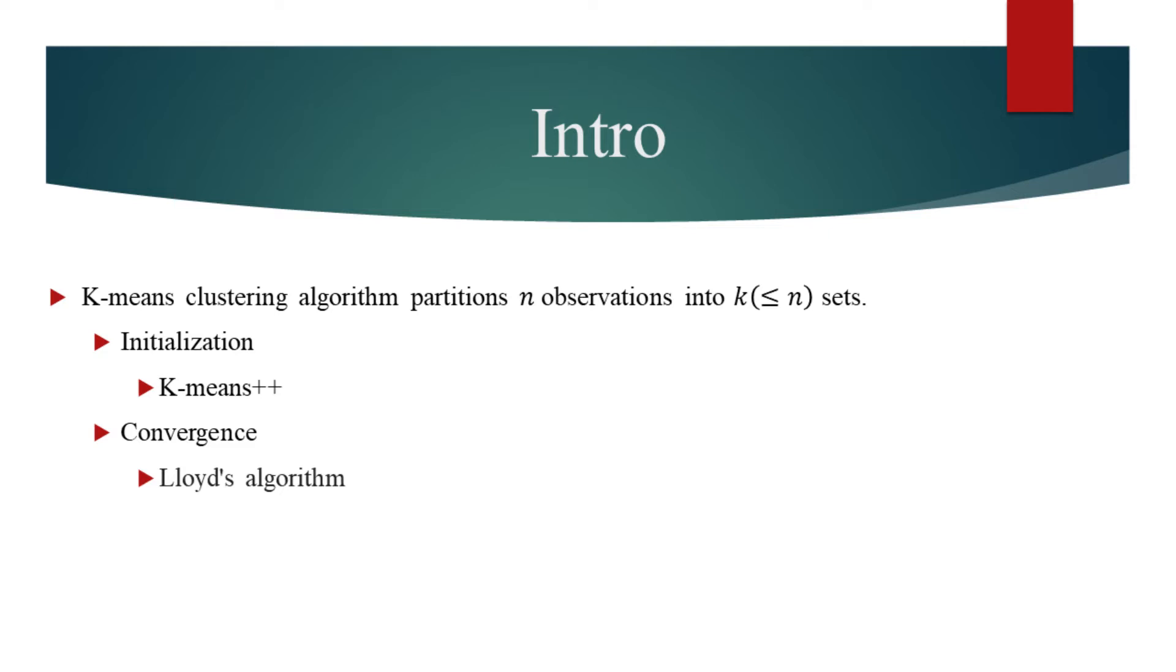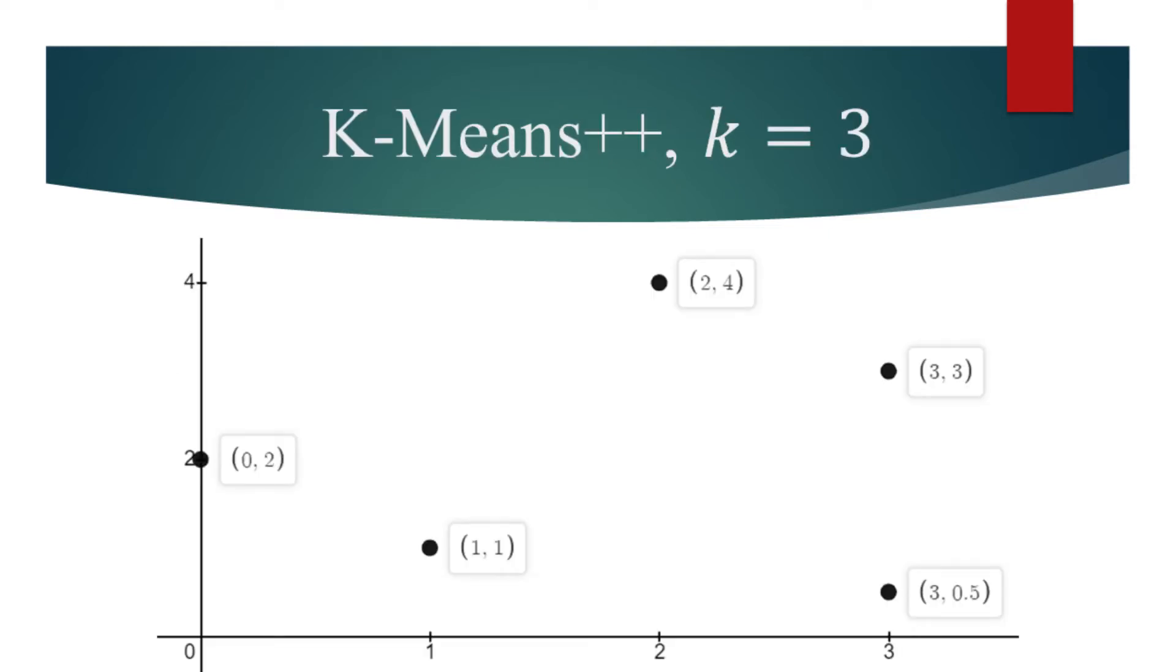We will now partition these data points into three clusters. We start K-means++ by choosing the first centroid uniformly at random among the data points.